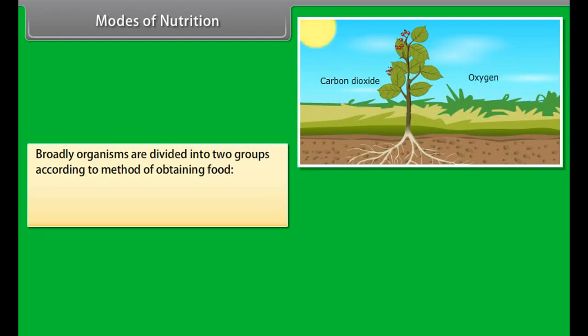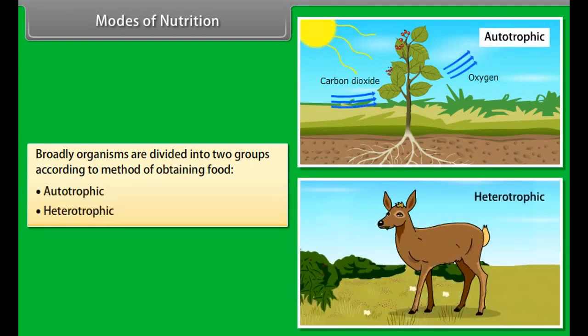The general requirement for energy and materials is common to all but it is fulfilled in different ways. So every organism has different mode of nutrition.